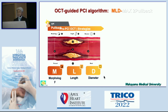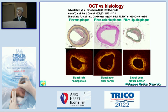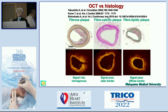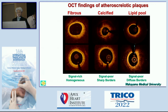After putting a stent, we have to check the MAX criteria. For the beginner, it's quite easy to understand what is seen by OCT. If there is a signal-rich, homogeneous pattern, that is fibrous. If you identify signal-poor with a clear border, it is calcium. If it is signal-poor and diffuse — with attenuation — that is lipid. If you know this pattern, I would say 95% correct. The other 5% depends on the case and your experience.